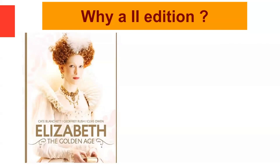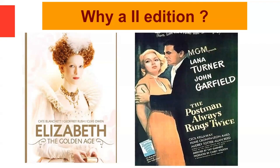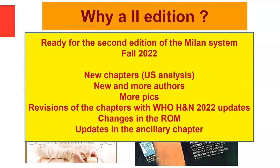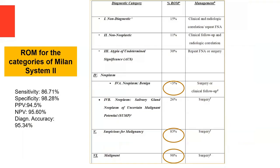In this golden age of the Milan system, why a second edition? Because this is an evidence-based system. The second edition, which will be published in July 2023, includes new chapters — including a chapter on ultrasound — new and more authors, more pictures with more than half of the pictures replaced, revisions of chapters incorporating the WHO and NAC 2022 updates, changes in the risk of malignancy, and updates in the ancillary chapter due to new genetic alterations.